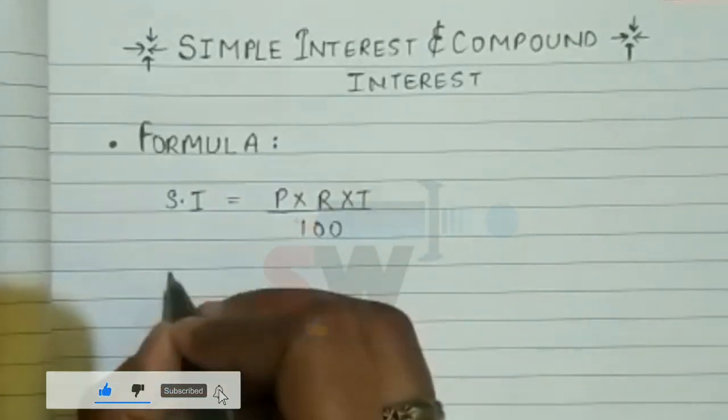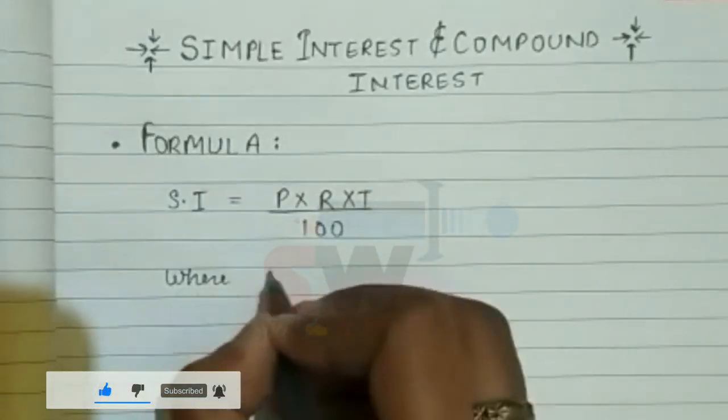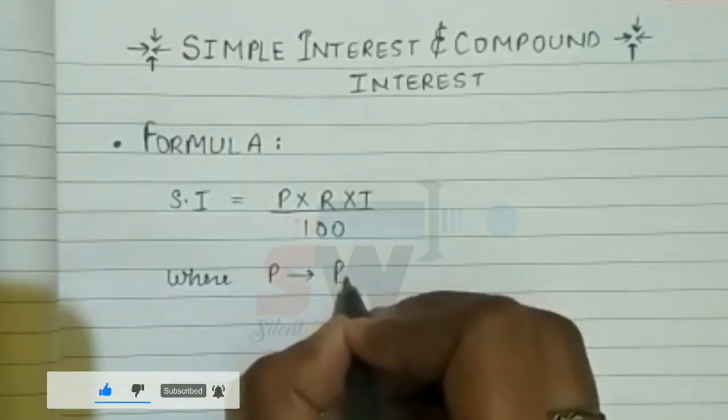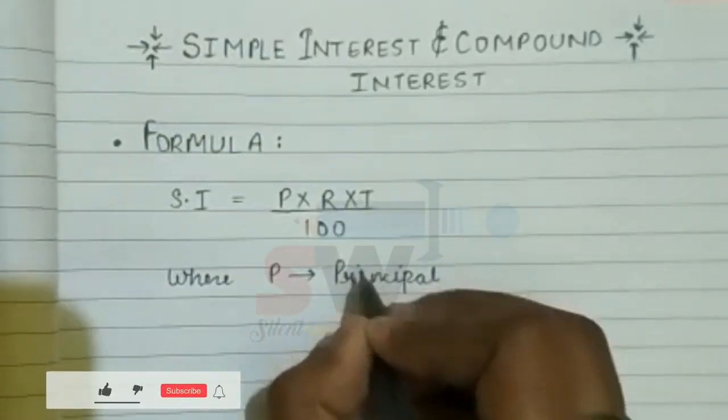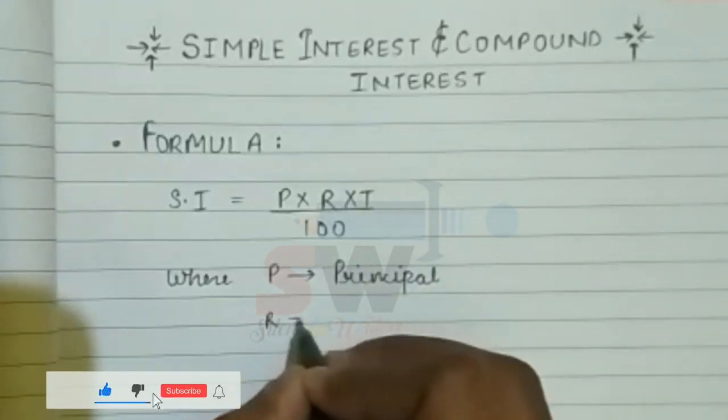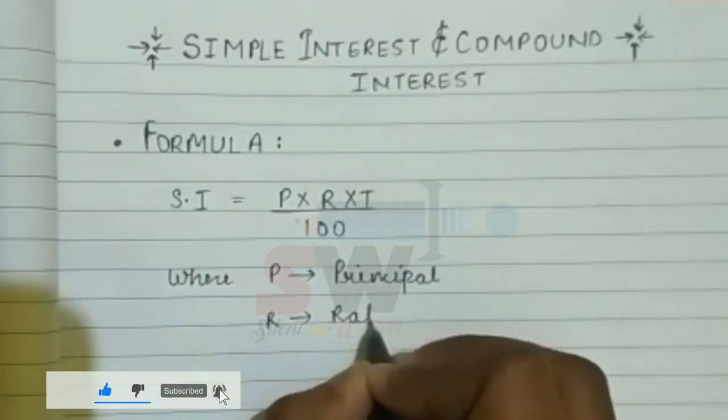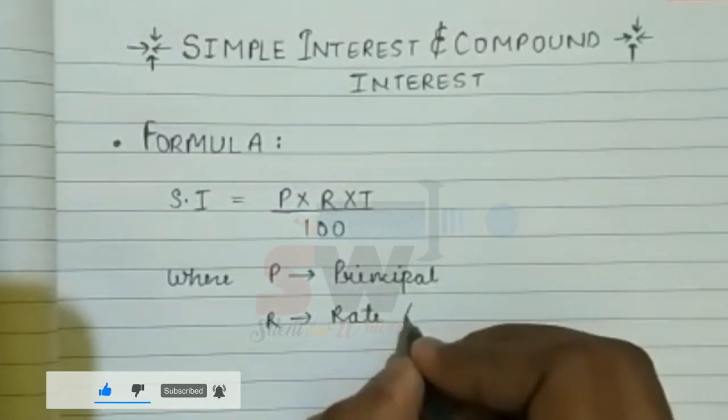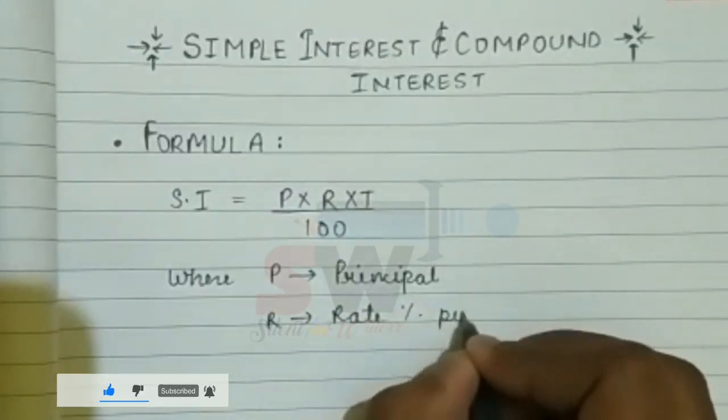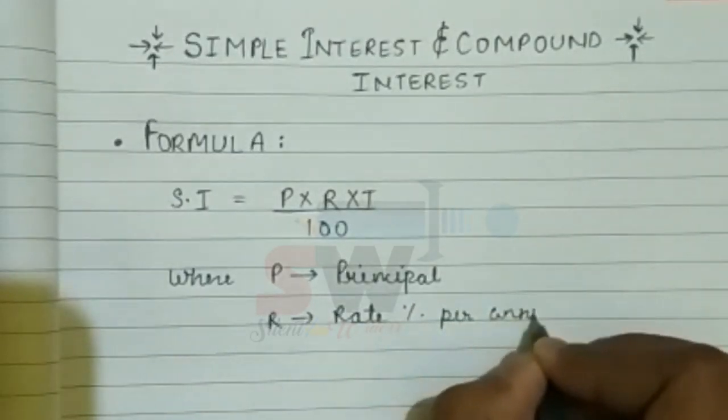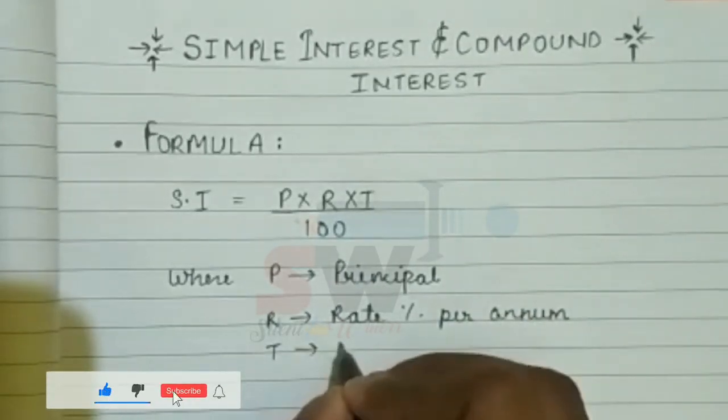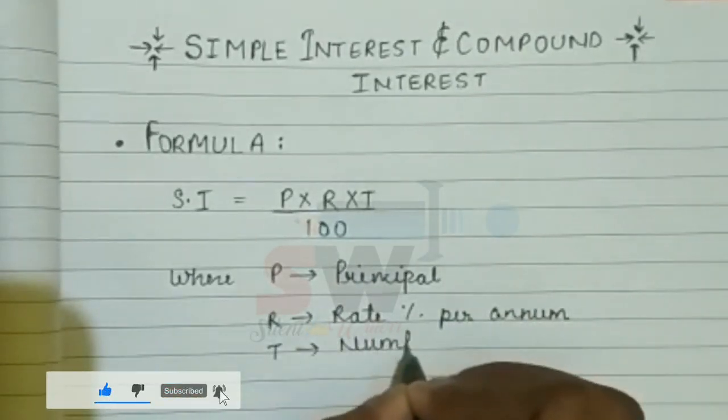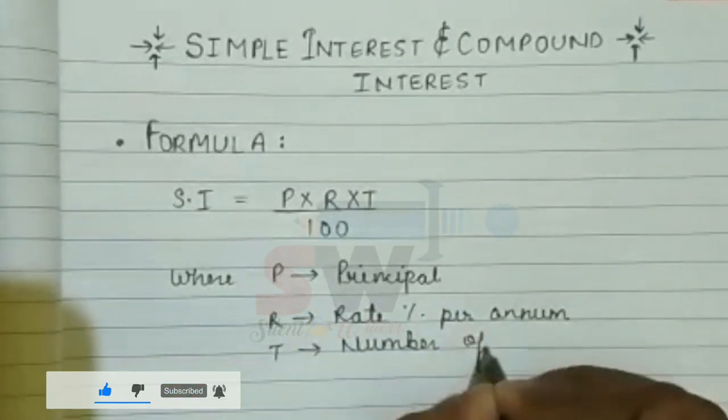Where P is principal, R is rate per annum, and T is number of years.